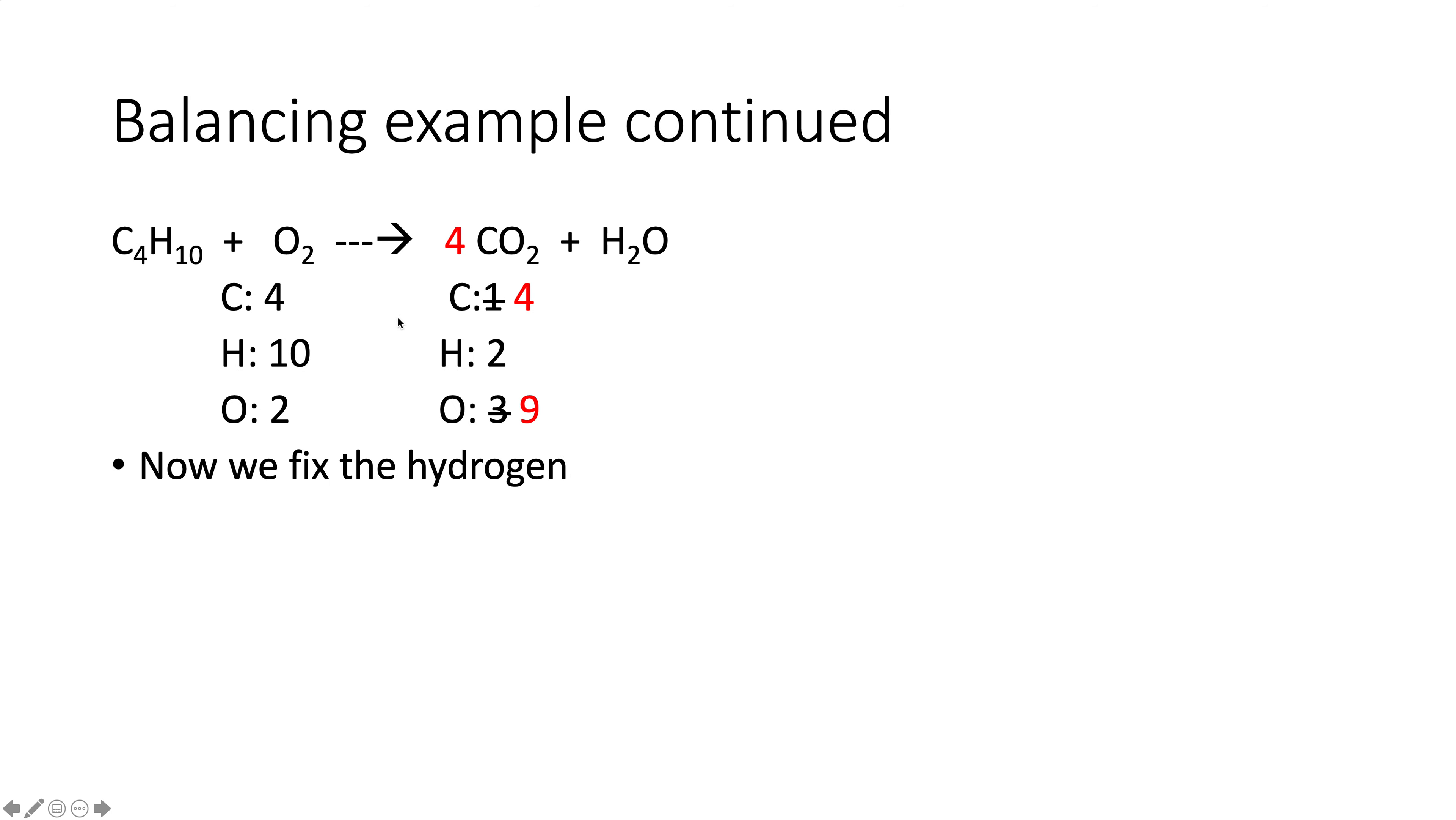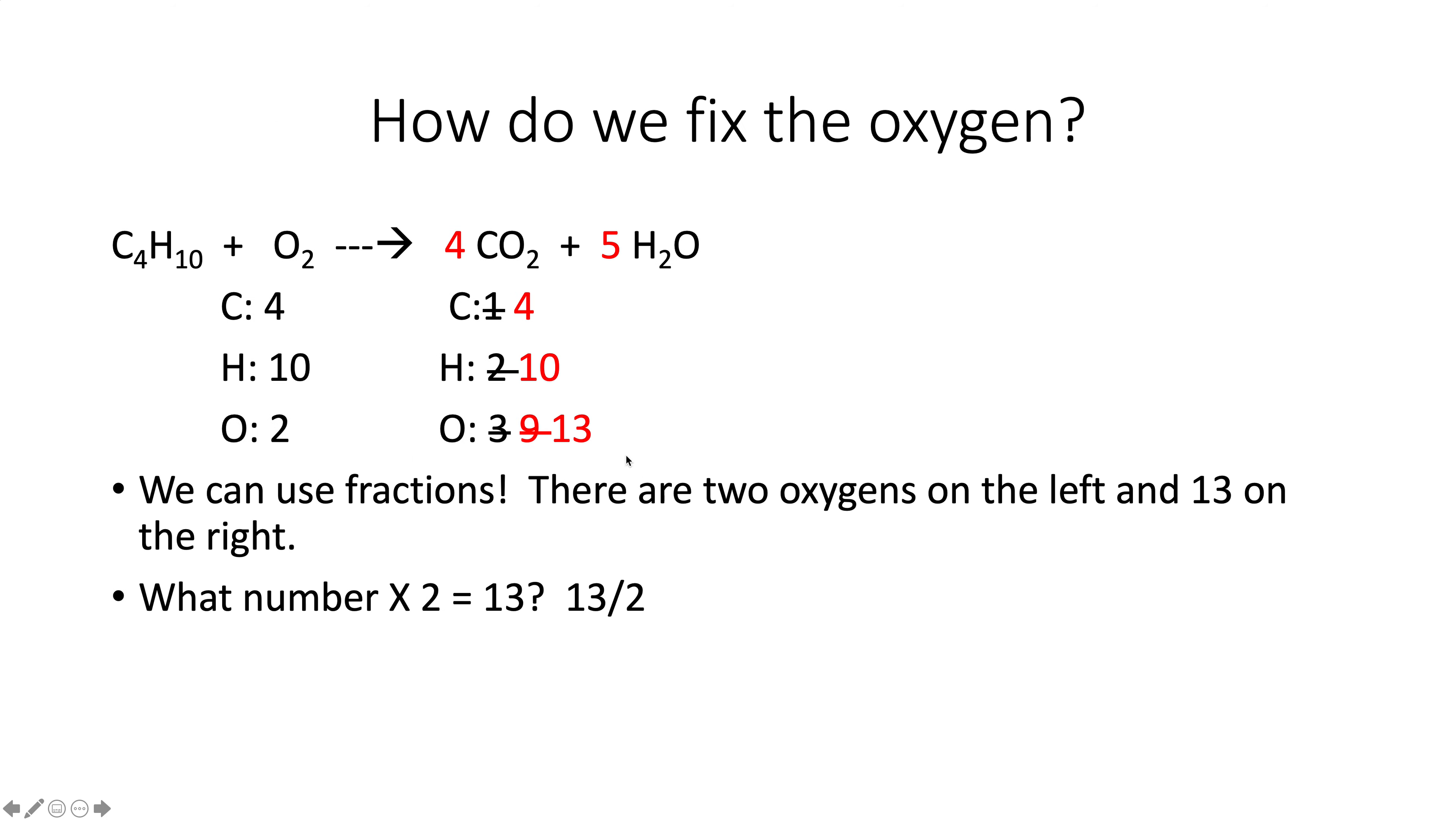Now we'll fix the hydrogen. So what number should we put in front of the water? That's right. We'll put a five in front of the water. So now let's count again. The carbon didn't change. The hydrogen, of course, changed to ten, which is what we were shooting for. The oxygen, how many oxygens do we have? We have eight plus five is thirteen. So now the question is, how are we going to balance that two and the thirteen?